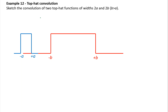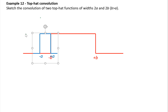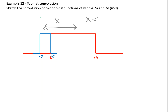The functions only start to overlap when we reach a specific point. The distance between the centers at that point is the sum of the two half-widths, a plus b. Because x is negative here, it's minus (a plus b). So as we come in from minus infinity, we don't get any contribution to the convolution until x equals minus (a plus b).